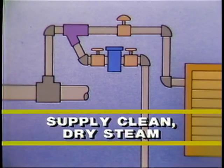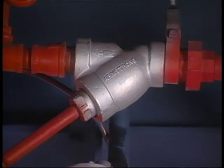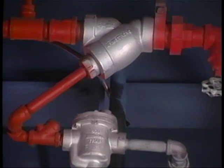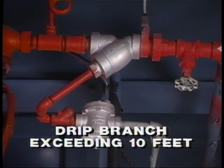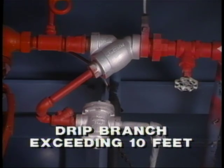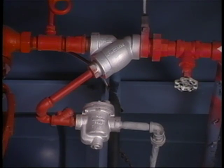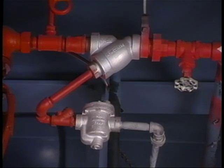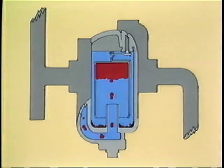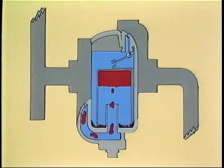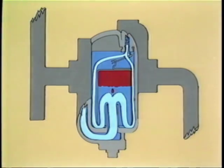Steam is taken from the top of the main and enters the system through a strainer which removes dirt from the steam. A drip leg and trap are required whenever a branch line exceeds 10 feet. This branch is dripped by an inverted bucket steam trap connected to the blow-down of the strainer. The inverted bucket trap is used here because of its excellent dirt-handling capabilities.